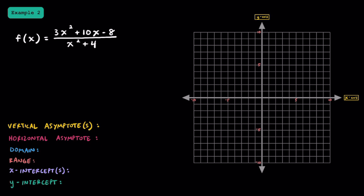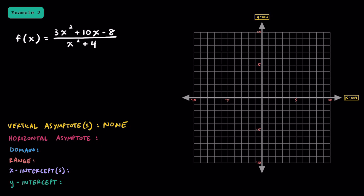In example 2, let's take a look at a function that's a little bit more complicated. We have f(x) = 3x squared plus 10x minus 8, all over x squared plus 4. Starting with the vertical asymptote, let's set the denominator equal to 0. If we have x squared plus 4 equals 0, we subtract 4 from both sides to get x squared equals negative 4. Taking the square root of both sides, x equals plus or minus 2i. Since we're only dealing with real numbers, we're not going to have a vertical asymptote for this function.